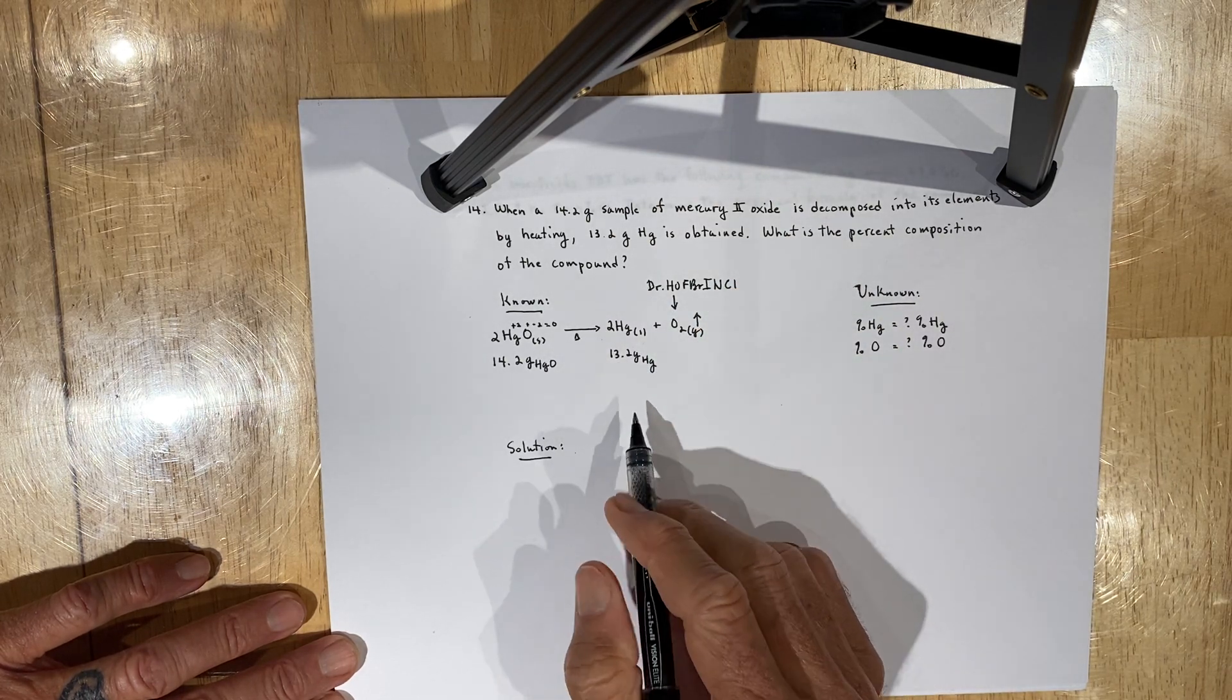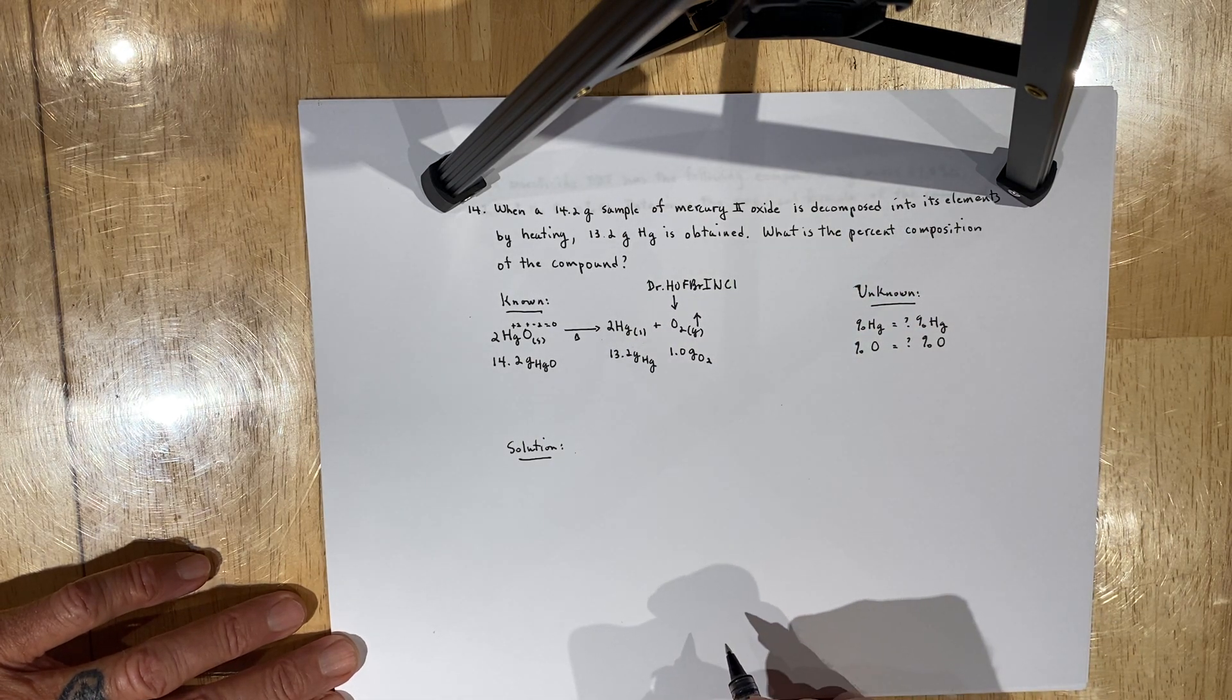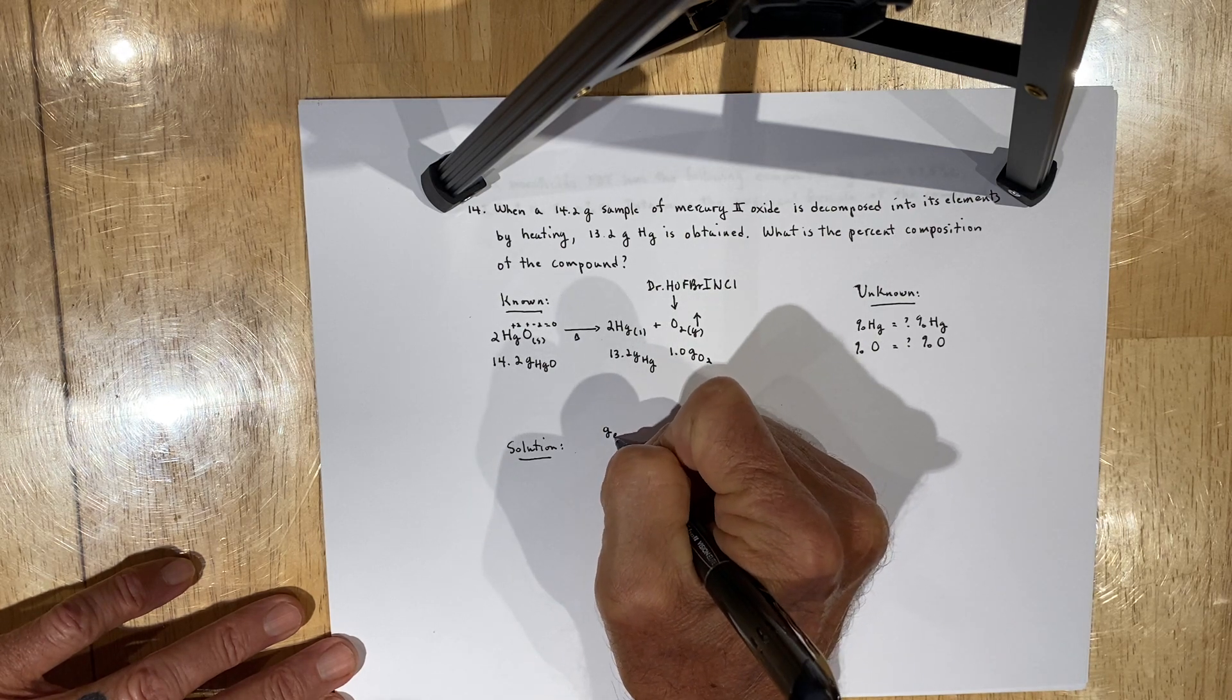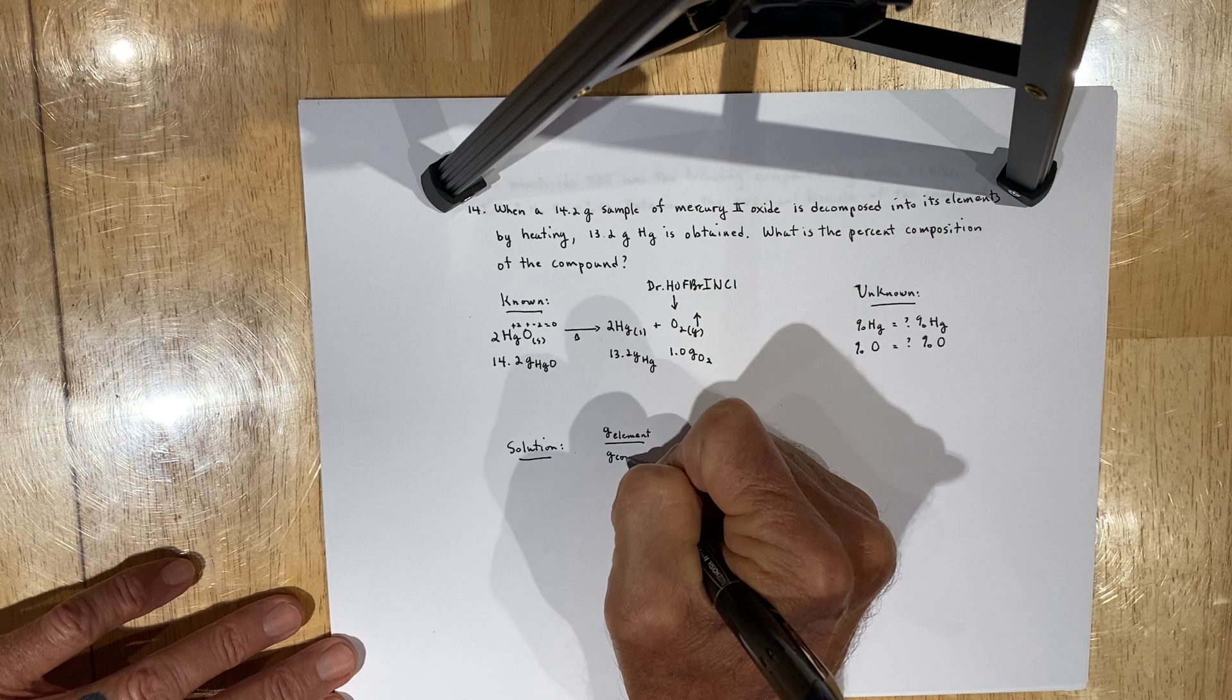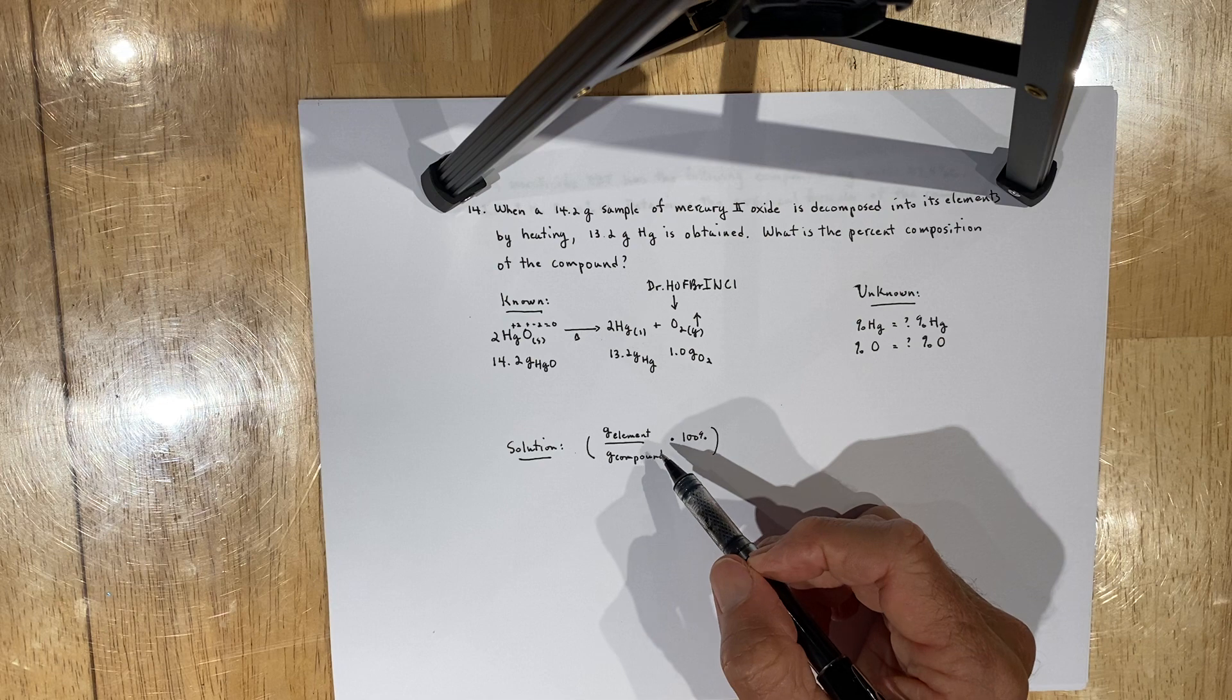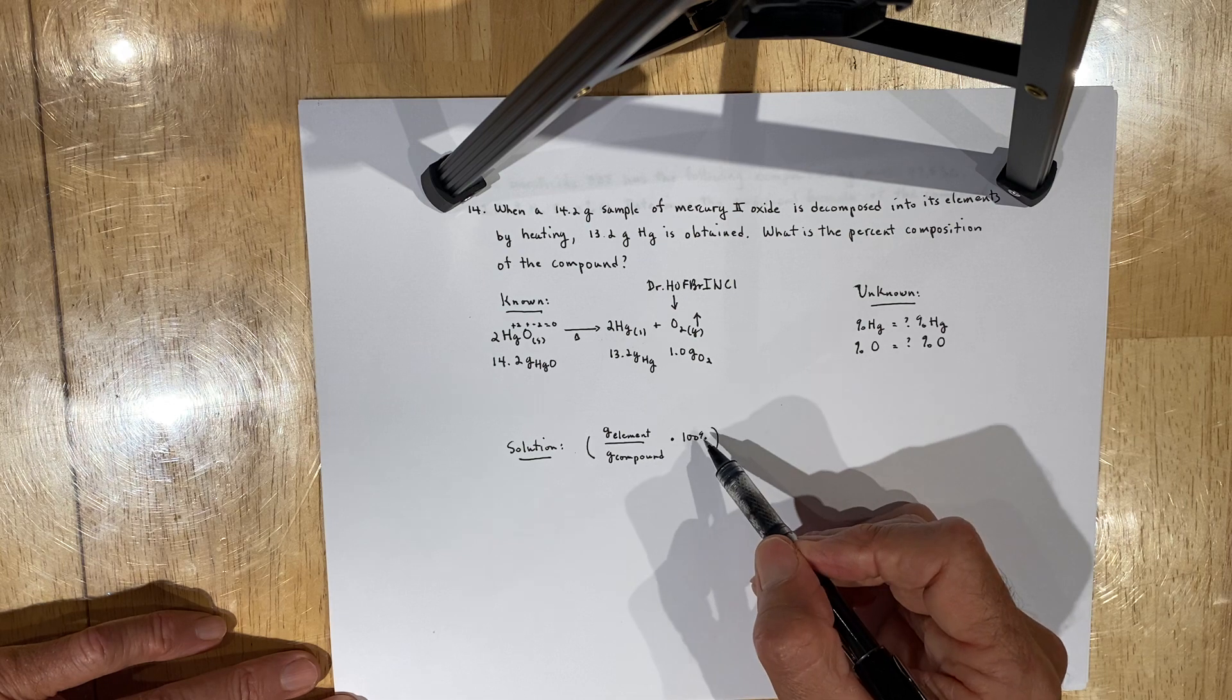And by default, the difference between 14.2 and 13.2 should be 1.0 grams of oxygen gas. That being said, in your solution, if you go back to your basic mathematics, essentially what you're going to do is to take the mass of an element and divide that by the mass of the compound that you've been given and multiply by 100%. So that's your solution pathway. Keep in mind, percent composition refers to the part over the whole, just like any other fraction or ratio. It's the part over the whole times 100.